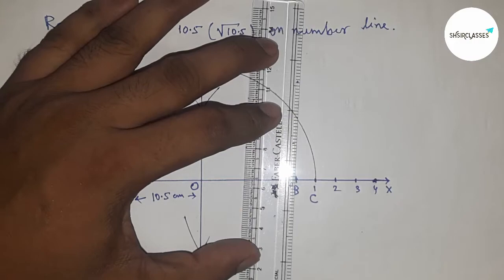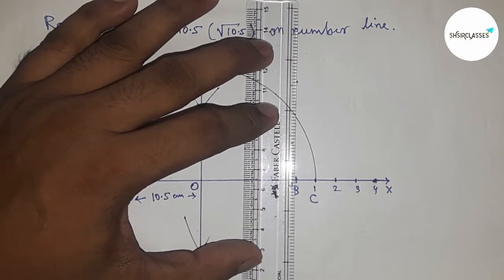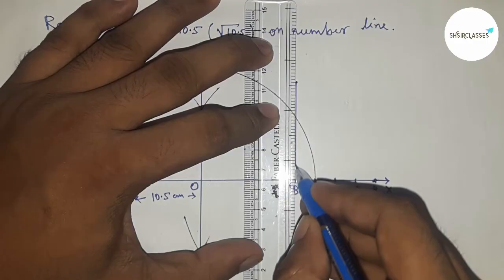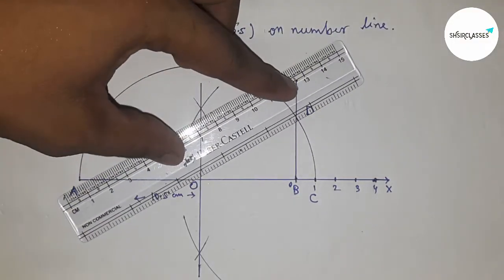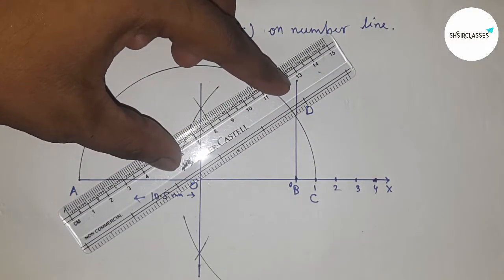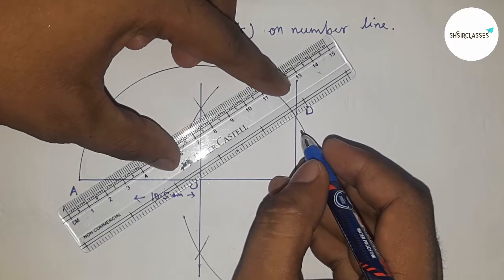Now join this and intersect at point D. This is point D. Next, join O and D, and it is the radius of the semicircle.